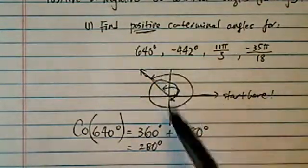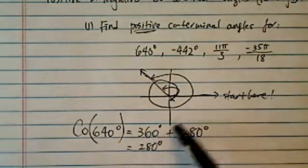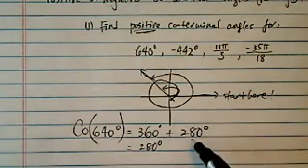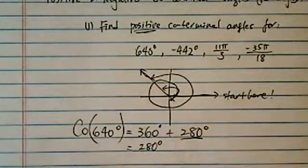360 is going around a circle once. We're saying, look, if you're already going around a circle once, I don't want to count it. I'm going to say what's the first time it's going to end. It's 280.